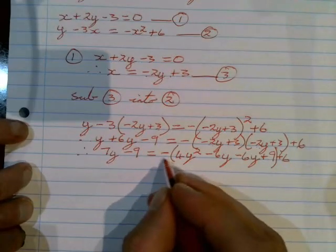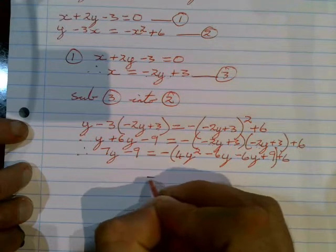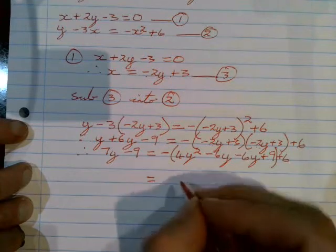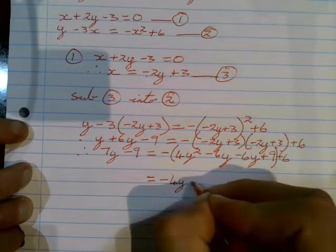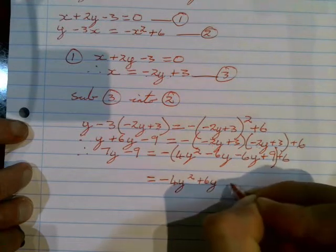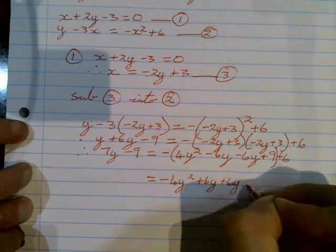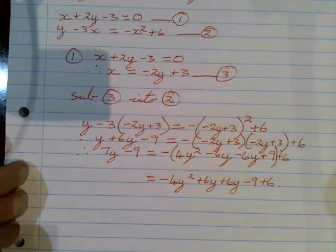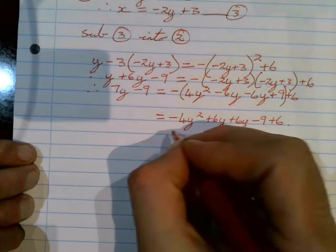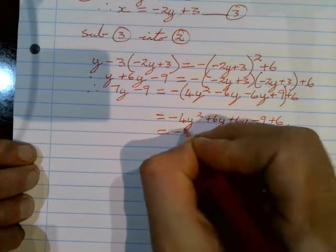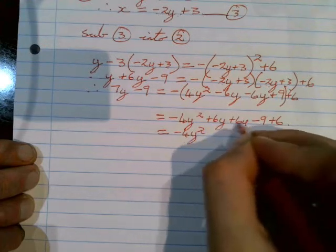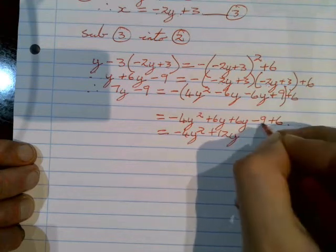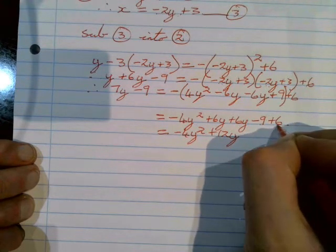Now we multiply in the minus sign on the right-hand side. There's nothing more to do on the left, so that becomes minus 4y squared plus 6y plus 6y minus 9, and then the plus 6 was on the outside so that stays as plus 6. We can now simplify the right side: minus 4y squared stays, 6y plus 6y is 12y, and minus 9 plus 6 is minus 3.